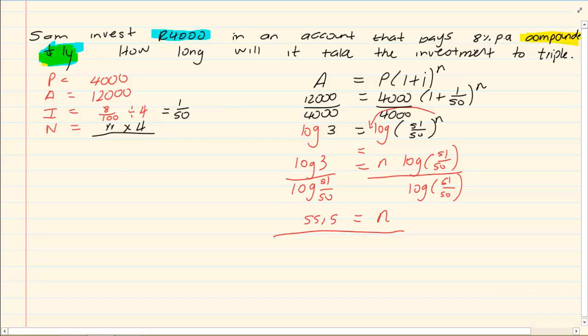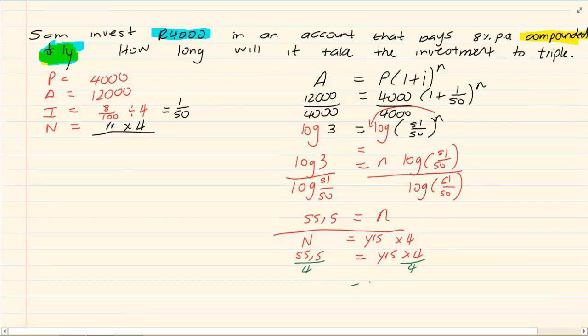But now remember, like your interest that you had done in grade 11, when we have our N, our N is the years times 4. Which means I have 55.5 is equal to my years times 4. So if I want my years, I have to divide by 4.